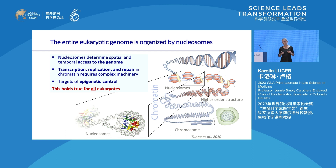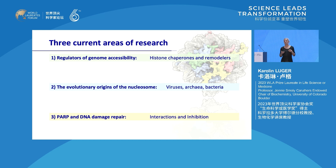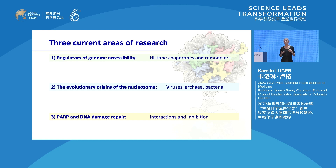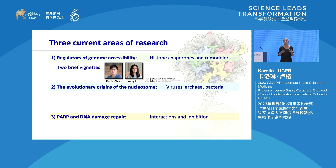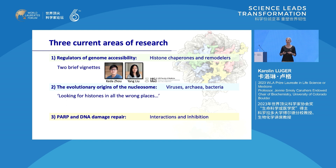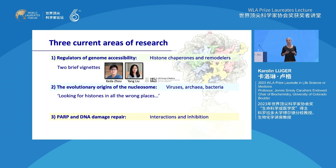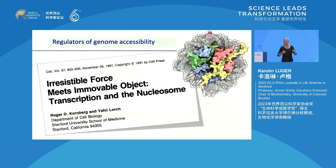Since starting my own lab, we've stayed pretty close to nucleosomes and chromatin, and we currently have three main areas of research. First, we study regulators of genome accessibility, most recently histone chaperones and ATP-dependent remodelers. I'll then spend the majority of my remaining time on the evolutionary origins of nucleosomes. We also have a very active research program on PARP and DNA damage repair — PARP is a cancer drug target and we're working hard on drug design and inhibition of this enzyme. I will not have time to talk about this today.